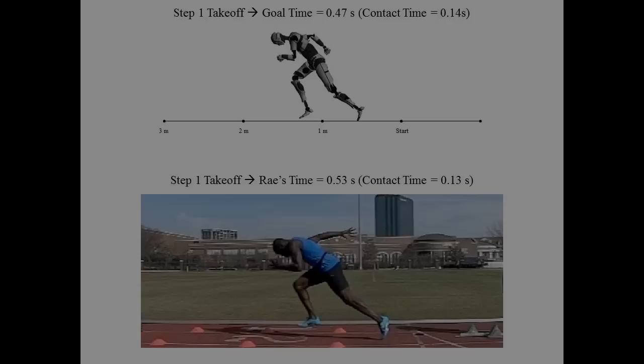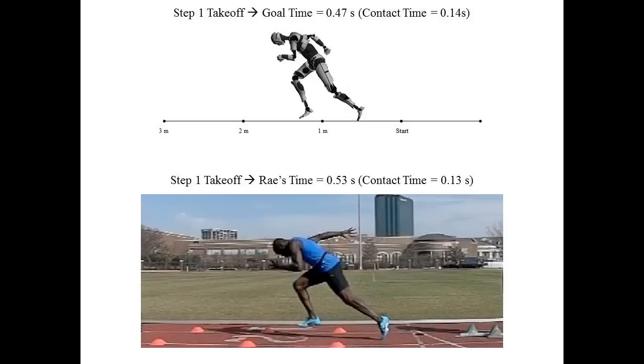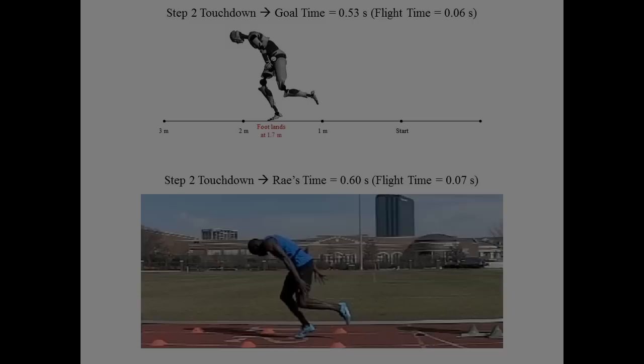Next, we will look at step one takeoff. Ray's step one ground contact time was excellent, and was actually slightly faster than the model. At takeoff, his right hip and knee are slightly more flexed than the model, causing the right foot to be slightly higher off the ground.